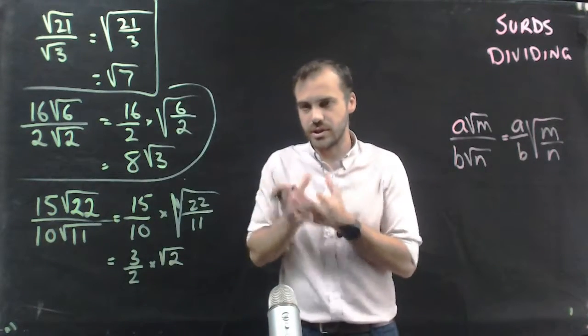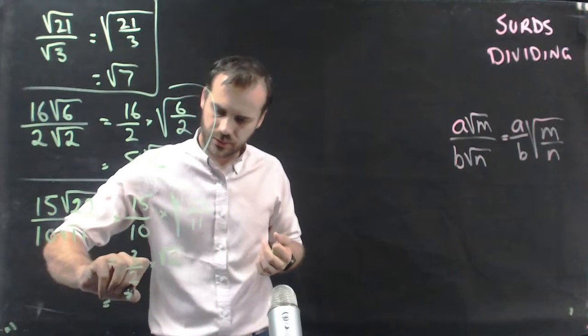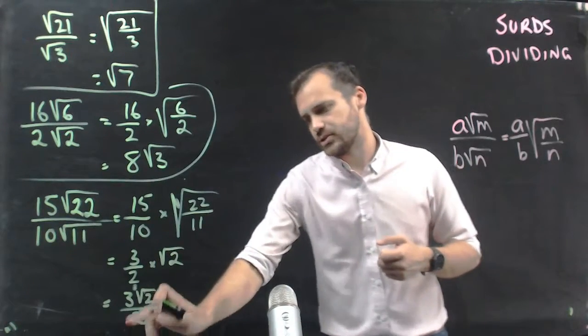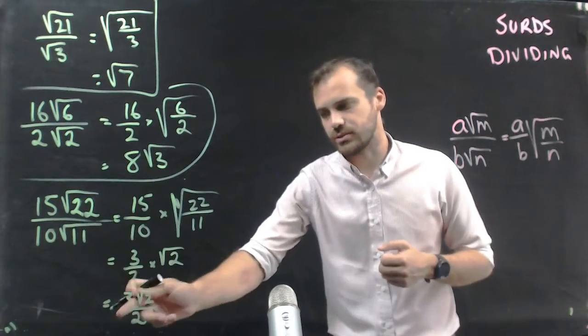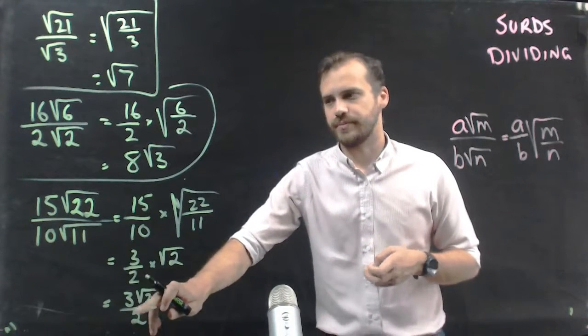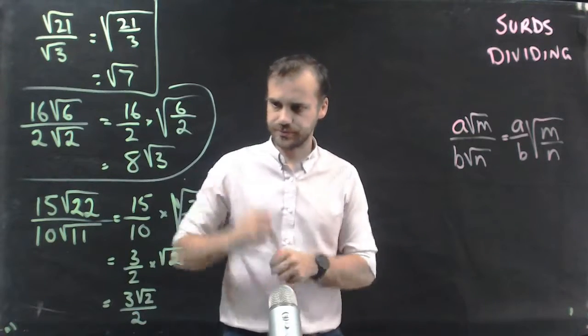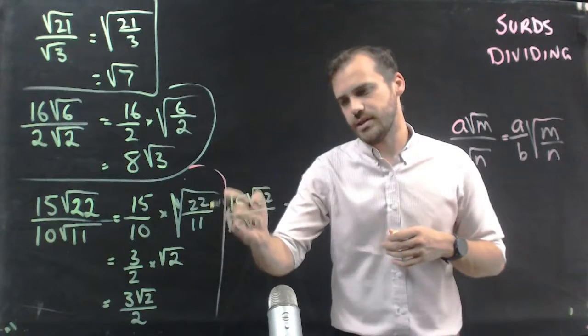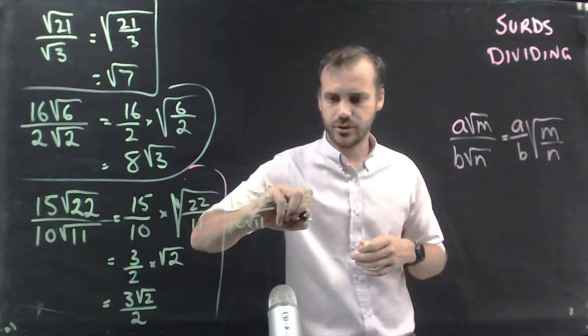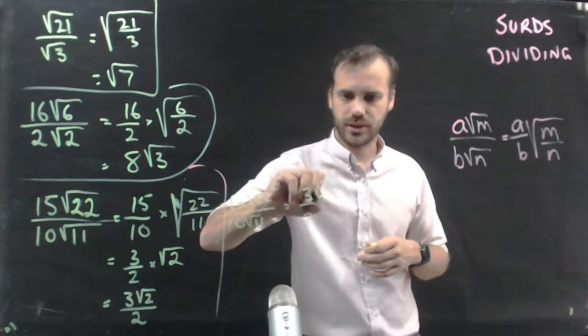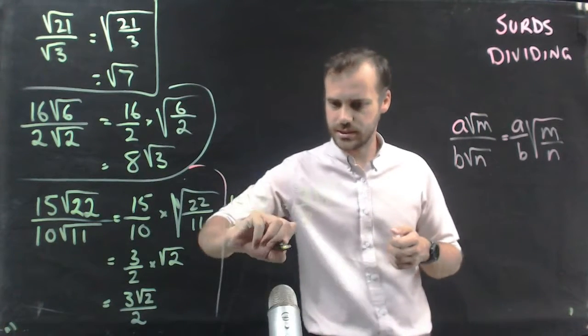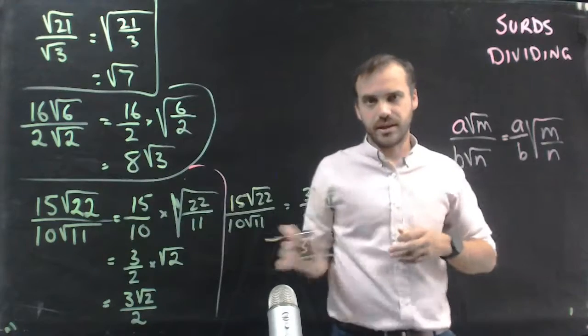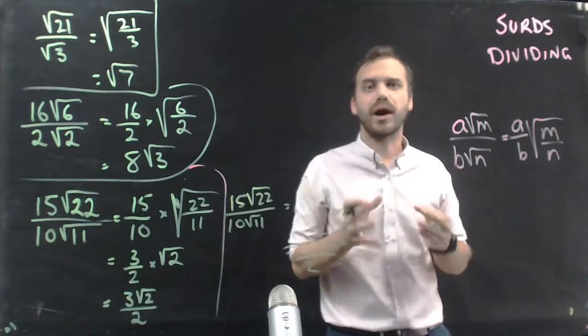The way that this should neaten up: (3√2)/2. That 2 belongs to the 3, it's 3√2 divided by 2. An alternative way to look at this is to simplify these first. 15 over 10 is 3/2, √22 over √11. Probably stick with this method here, but that's an alternative way of thinking about these things.